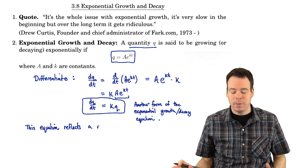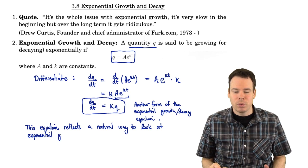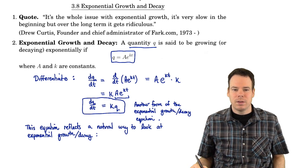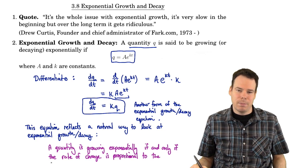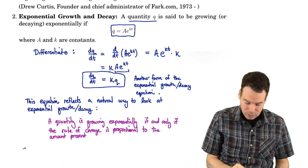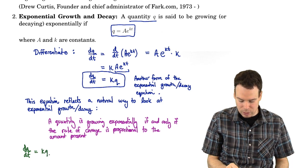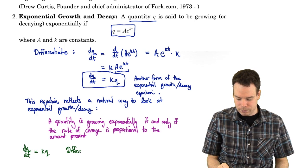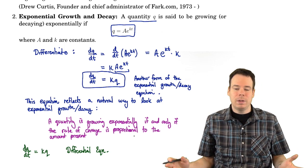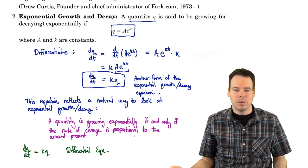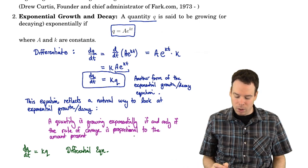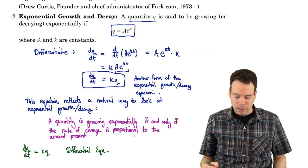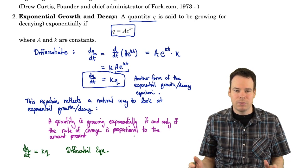This equation dQ/dt = K times Q is a natural way to think about exponential growth because it says a quantity is growing exponentially if the rate of change in that quantity is proportional to the amount that's present. This equation is called a differential equation, and they are extremely important in applying math to areas of chemistry, physics, and engineering. Differential equations crop up all over the place, and oftentimes nature communicates to us through a differential equation.